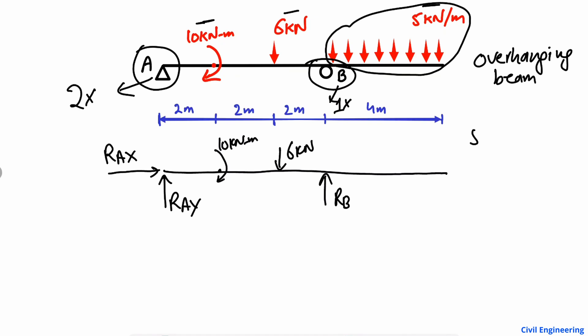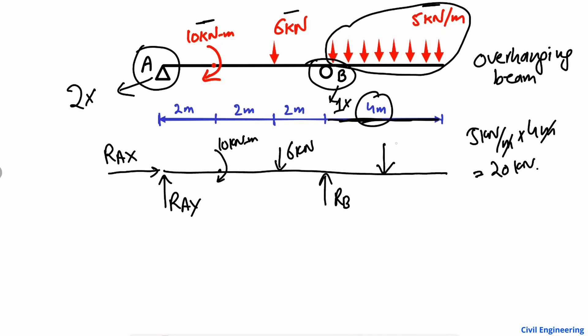We multiply 5 kilonewton per meter by the distributed length of 4 meters, which gives us 20 kilonewton. This means the total equivalent point load acting at the midpoint of that portion is 20 kilonewton. It is very important to know how to convert a uniformly distributed load into a point load — you multiply it by the length of the distribution.